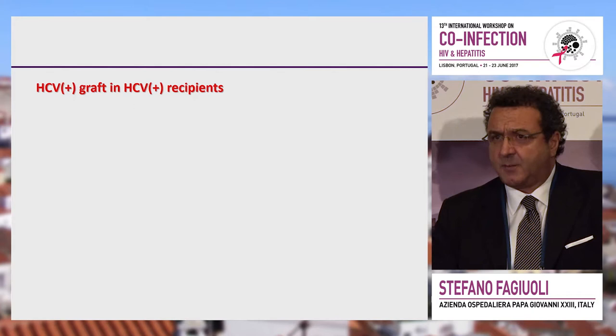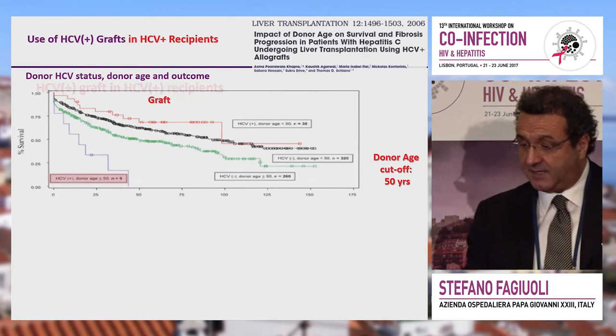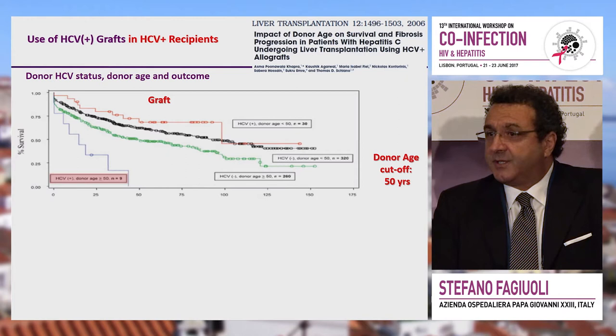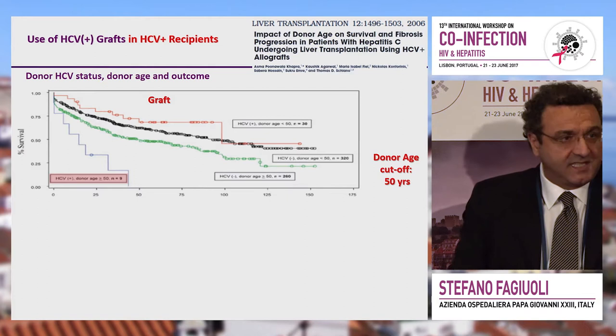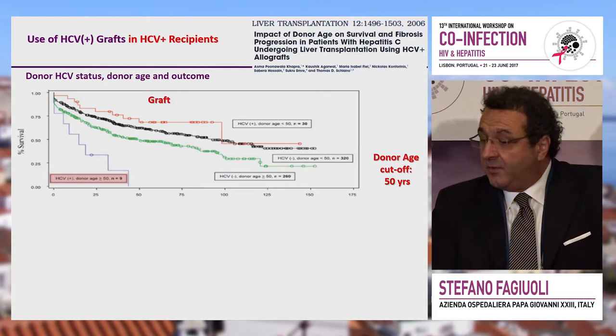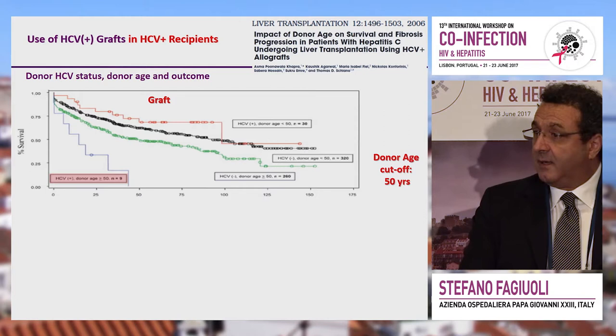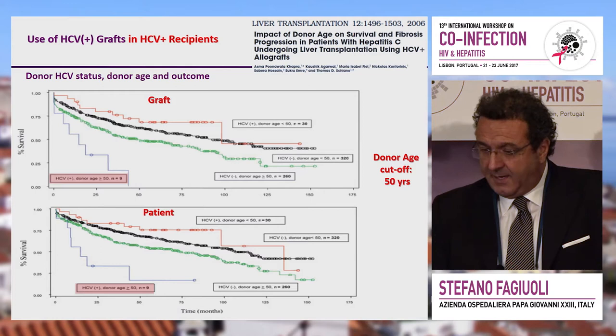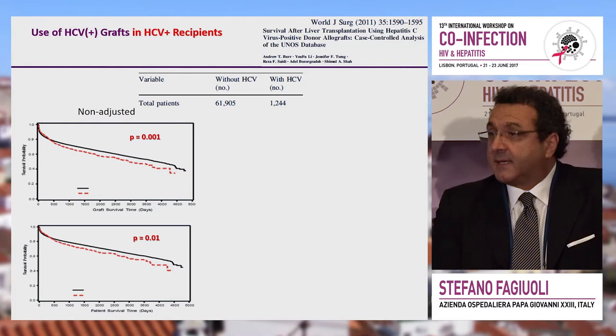Most of the data are pre-DAA. Important donor factors include age: if the donor is over 50 years old with HCV infection, that graft is going to do much worse than under any other condition — though in Italy the average donor age is well above 65, so a 50-year-old donor would be a dream. This is pre-DAA era, and it holds true for both graft and patient survival.